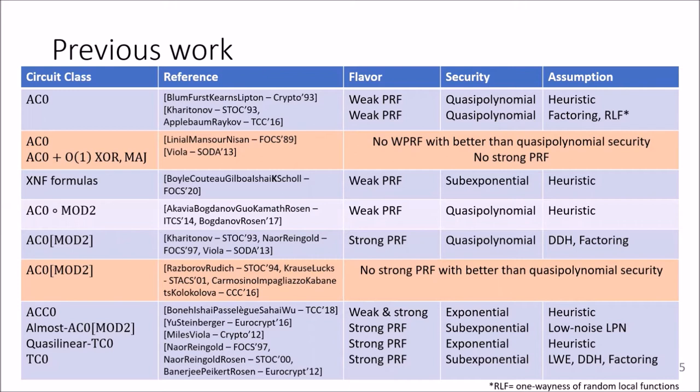And the second thing I want to mention is, if you look at the orange parts here, we know that in AC0 there cannot exist weak PRFs with better than quasi-polynomial security by the famous result of Linial, Mansour, and Nisan.